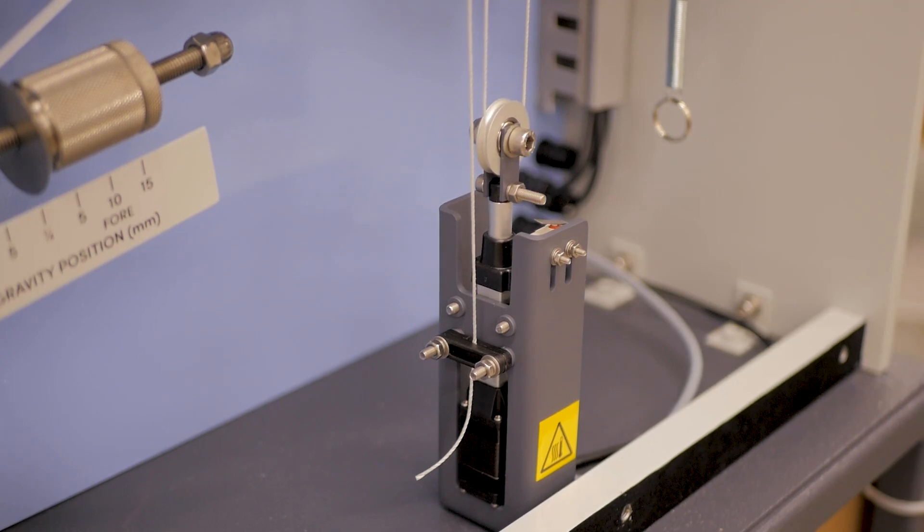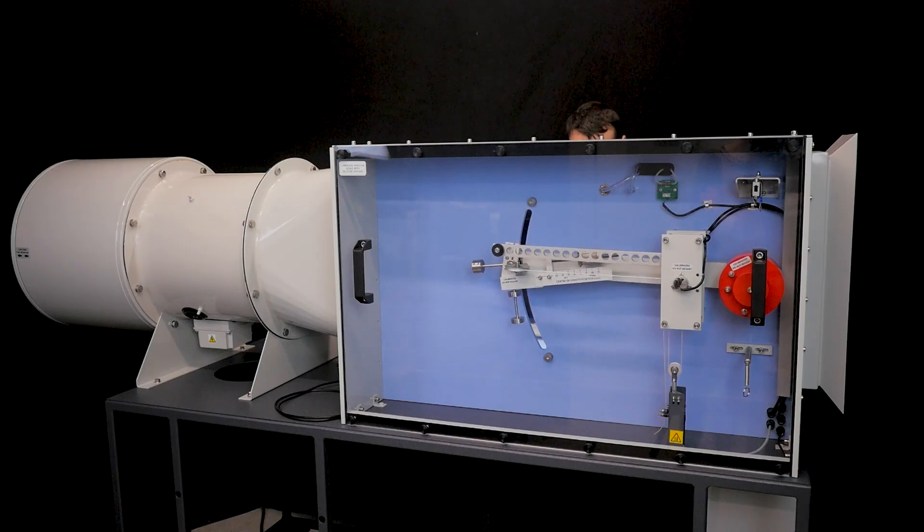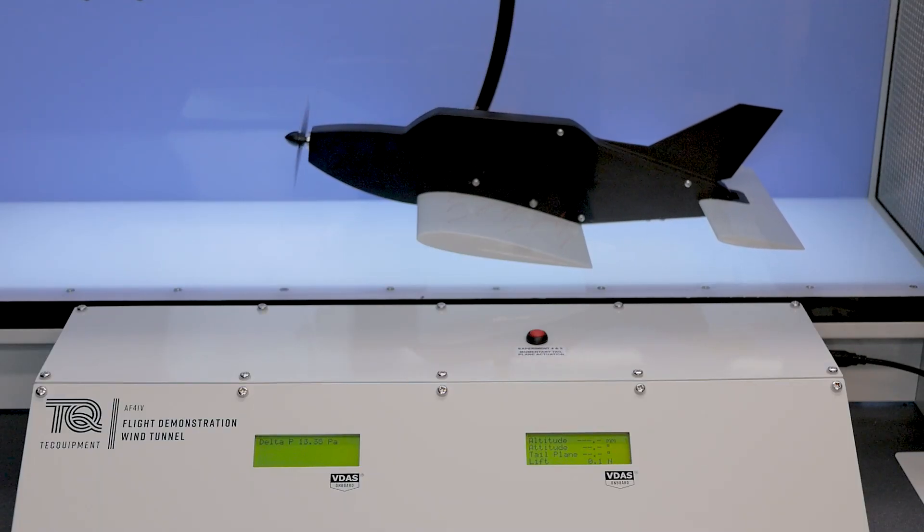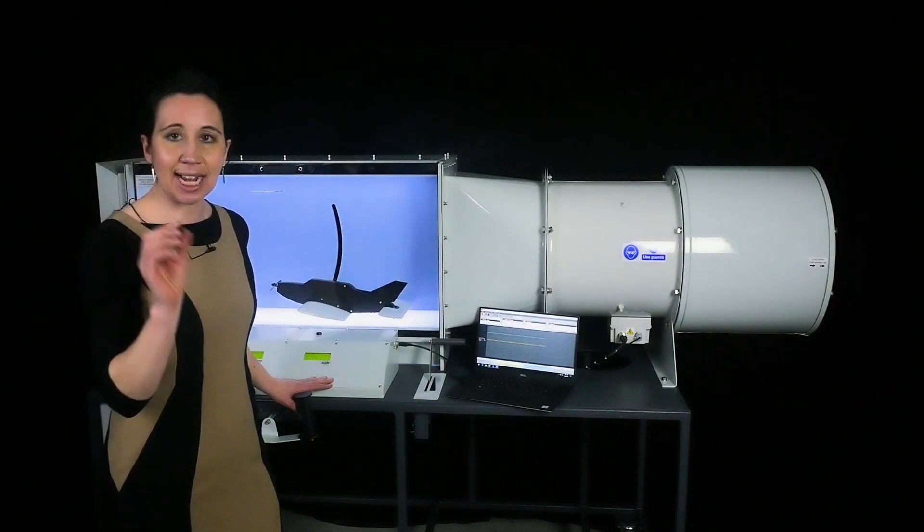The fly-by-wire control offers improved control over the model aircraft. The electronics display on the front shows the airspeed, attitude, pressure and lift, which also means that this experiment can be used effectively to perform accurate analysis stand-alone without using VDAS if preferred.